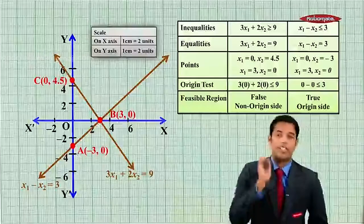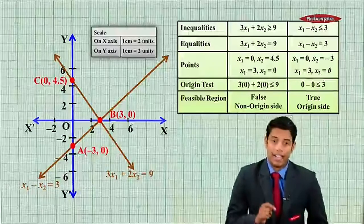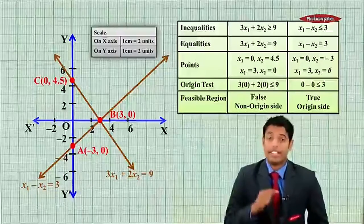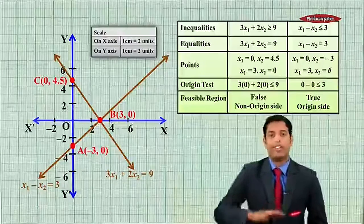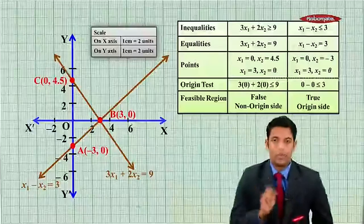So it will be in the upper area. And for second line, feasible region contains the origin, therefore this will be on left hand side of the line x1 minus x2 less than or equal to 3. So the shaded region will be as shown in the diagram.